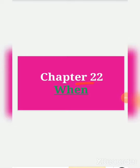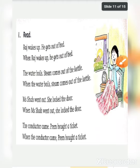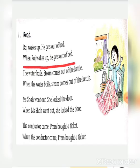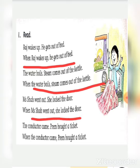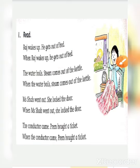Now let's see chapter 22, that is 'When.' Let's see some examples. 'Raj wakes up, he gets out of bed.' — When Raj wakes up, he gets out of bed. 'The water boils, steam comes out of the kettle.' — When the water boils, steam comes out of the kettle. 'Miss Shah went out, she locked the door.' — When Miss Shah went out, she locked the door. 'The conductor came, Prem bought a ticket.' — When the conductor came, Prem bought a ticket. You can see, children, that using 'when' we are joining two sentences.